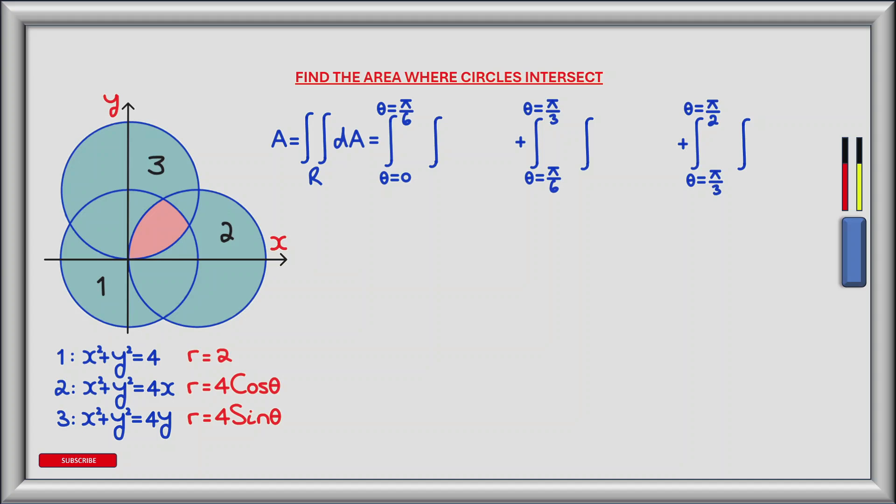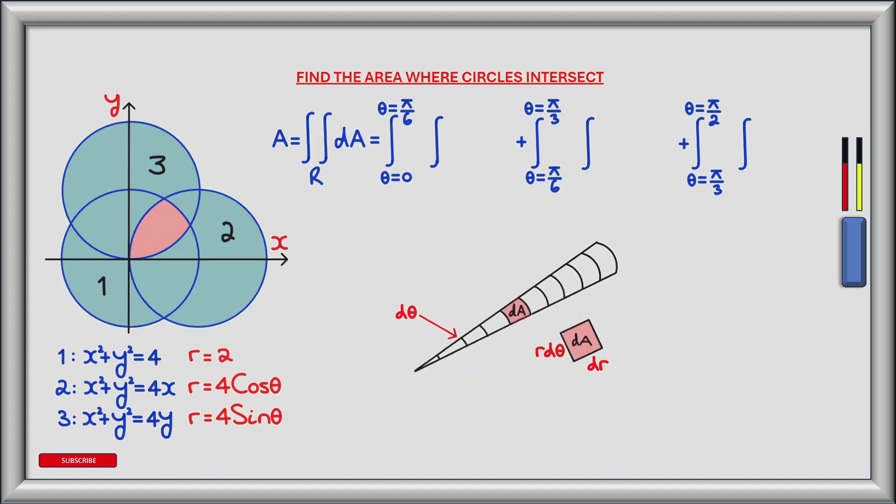Now let's look at what happens when we sum infinitesimally small pieces of area along the radial distance, in the r direction. This will help us define the inner integrals. This diagram represents a sector of the region R. The angle it makes is infinitesimally small and is defined by d theta. Within the sector we have infinitesimally small pieces of area denoted by dA. The size of each area is the length multiplied by the width, where dr is the length and r d theta is the width. So dA equals r dr d theta.